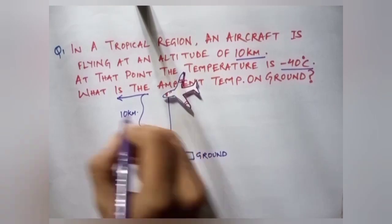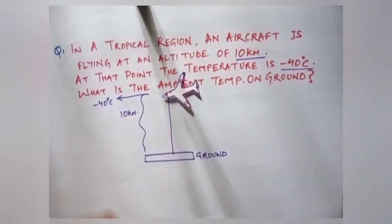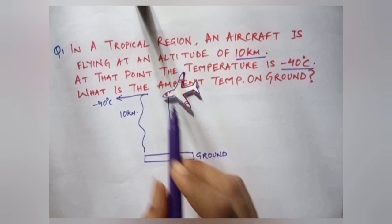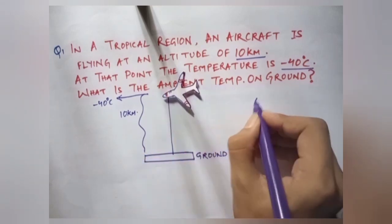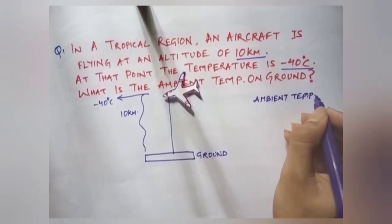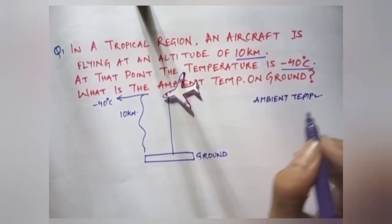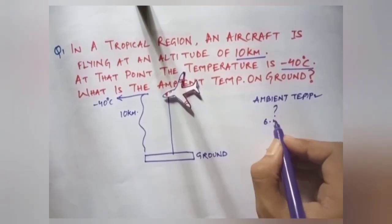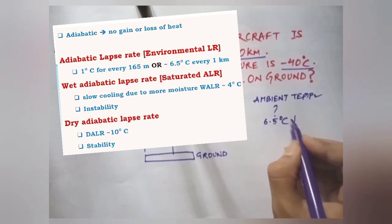Now we will see what is the temperature near the aircraft. The temperature at that point is minus 40 degree celsius. So we have to find the temperature of the ground. Ambient lapse rate is equal to the environmental lapse rate, and we know it is 6.5 degree celsius per kilometer.